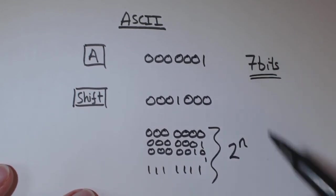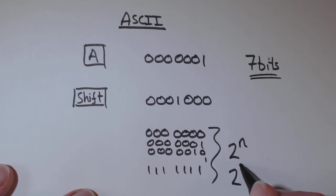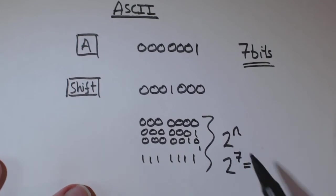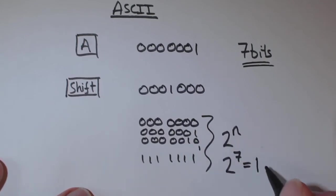And n is the number of bits. So if we actually put in the calculator 2 to the power of 7, that tells you the number of unique combinations. So that gives you 128.